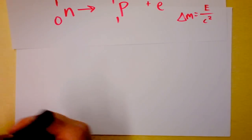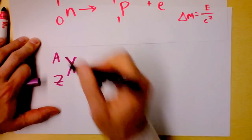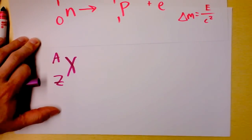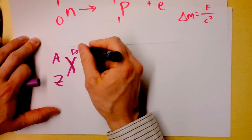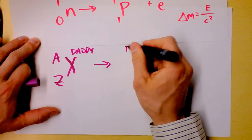Let's get a daddy. Here's a daddy. X, the daddy. And it's got that many protons and that many protons plus neutrons. And it's daddy. And it's going to decay into the daughter.